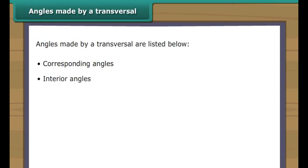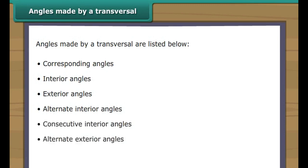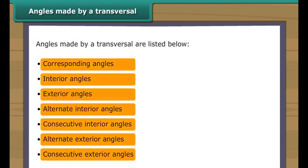Angles made by a transversal. Transversals form seven types of angles: corresponding angles, interior angles, exterior angles, alternate interior angles, consecutive interior angles, alternate exterior angles, and consecutive exterior angles. Click each button to know more about the above mentioned angles.